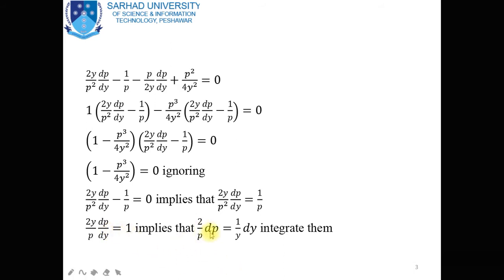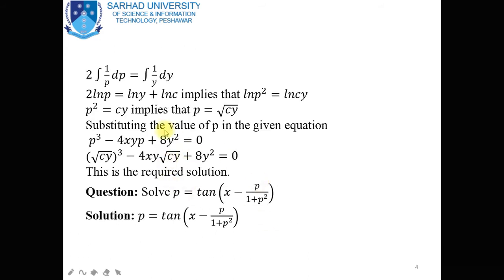Now by separation of variables, we have 2 divided by P times dP equal to 1 over Y times dY. Separation of variable is possible. Now taking integration — dear students, note that this is actually a first order differential equation in Y and P, where P is the dependent variable with dP/dY. After integration, we have 2 natural log of P equal to natural log of Y plus natural log of C. We can write log P squared equal to natural log of CY, so P squared equals CY. This implies the value of P equals the square root of CY.